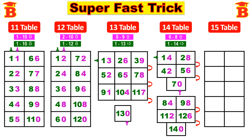Now this is the 14th table. See the green color arrow mark and take it in that order. So the 14th table is: 14, 28, 42, 56, 70, 84, 98, 112, 126, and finally 140.